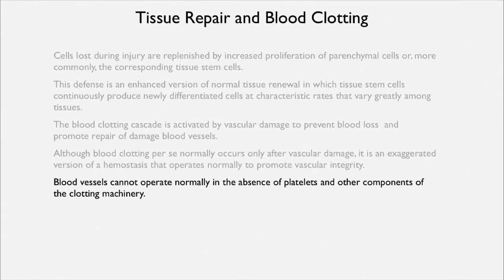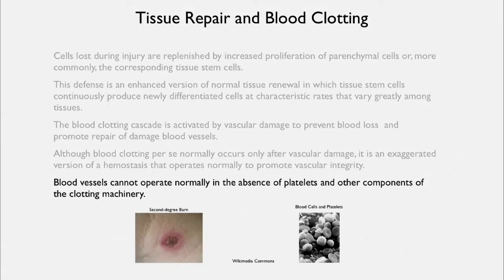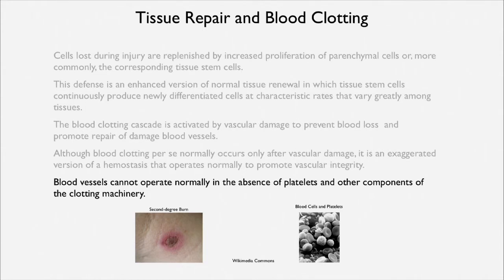Although blood clotting per se only occurs after vascular damage, it's an exaggerated version of hemostasis that operates normally to promote vascular integrity — blood vessels can't function normally without platelets and other components of the clotting machinery. Here you can see a second degree burn and the kind of tissue repair activated after injury, and a scanning EM of blood cells and platelets. Interestingly, everything in that picture — the red blood cell, the T lymphocyte, the platelets — is made by the same stem cell in the bone marrow.